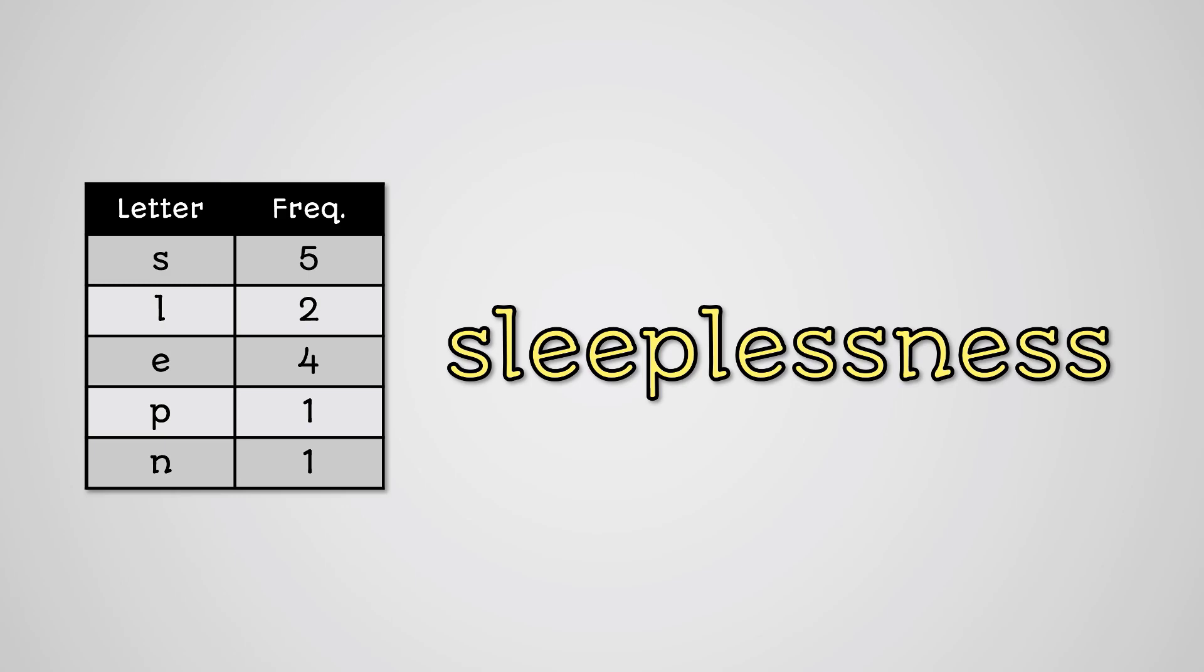Let's look at the word sleeplessness. If we were to break this down as a frequency table as we did with Huffman Coding, we would get a table like this. In this table, we have each of the letters in the word and the total number of times that letter appears.